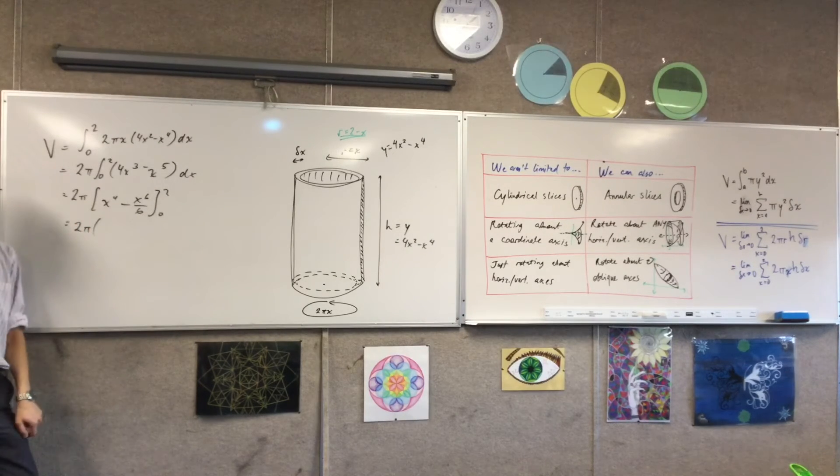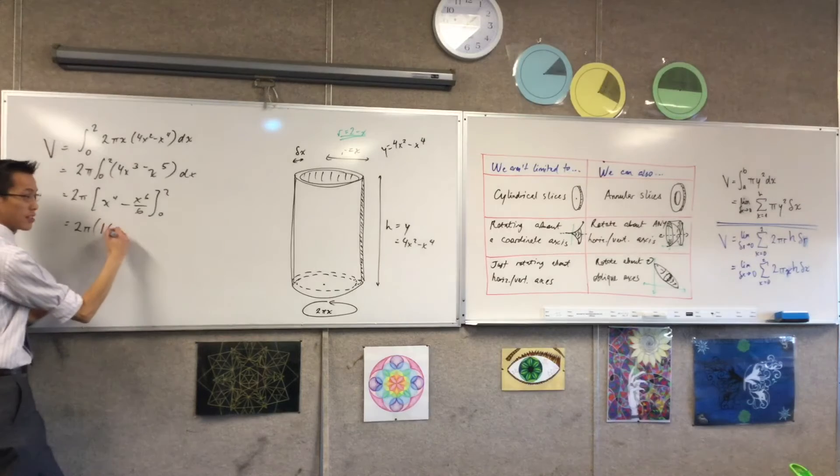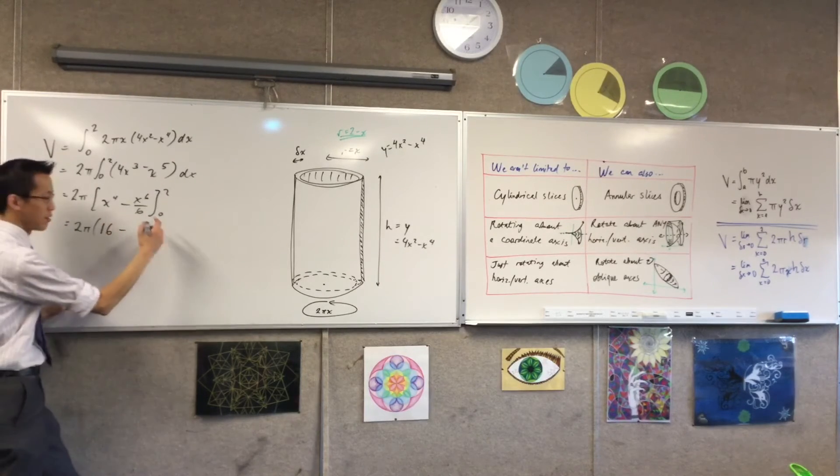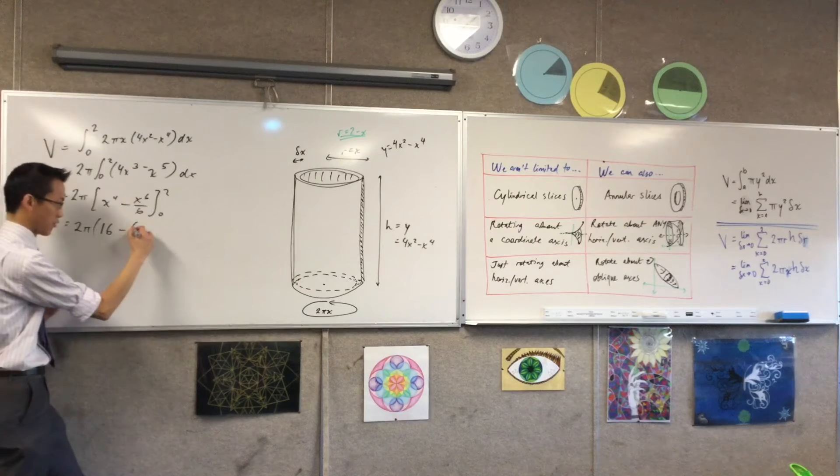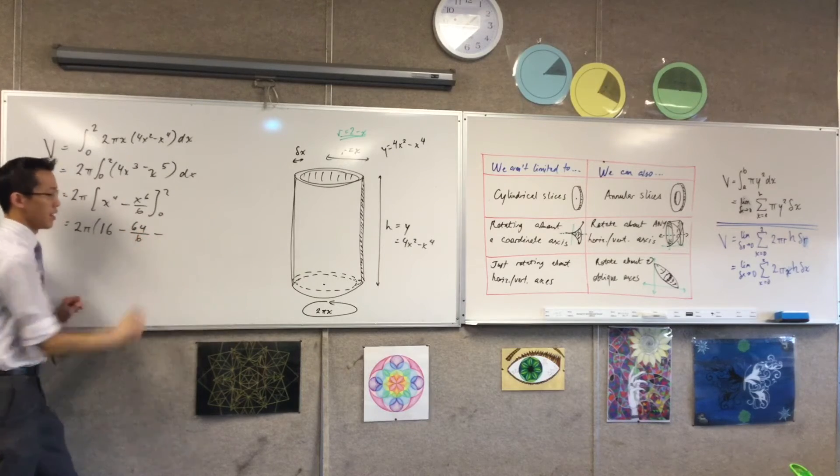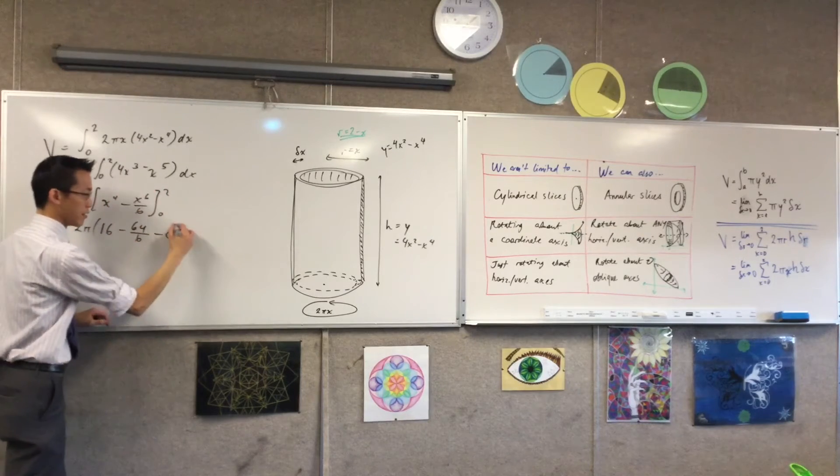2 to the 4, that's 16. 2 to the 6, 64 on 6. You evaluate both of these at 0 and you get 0.